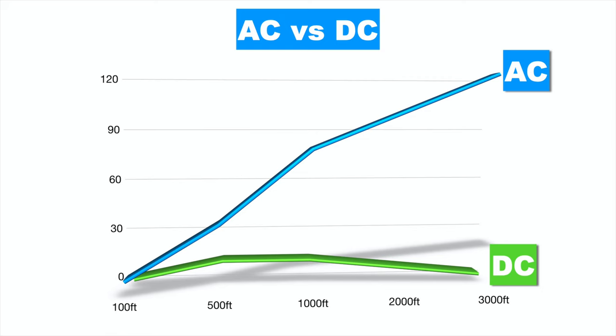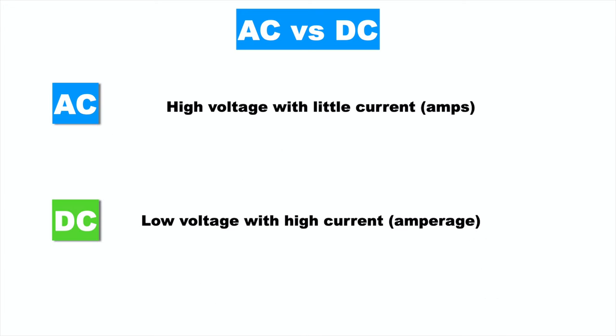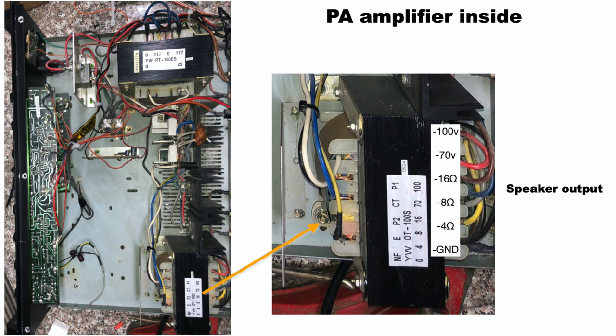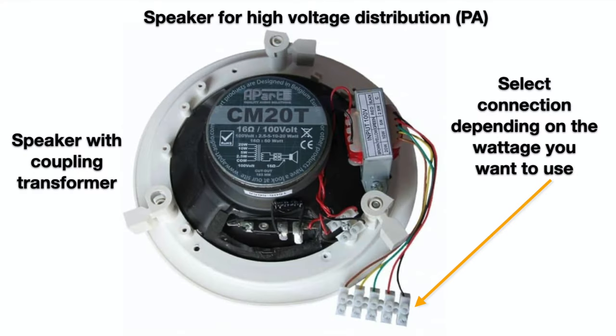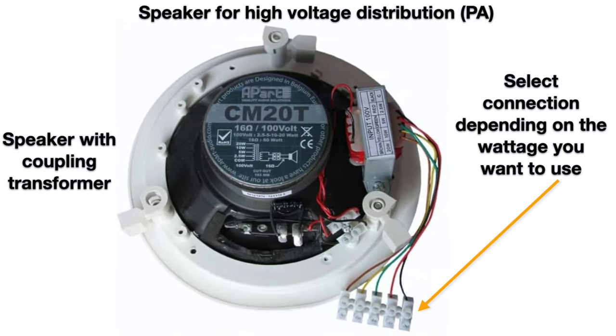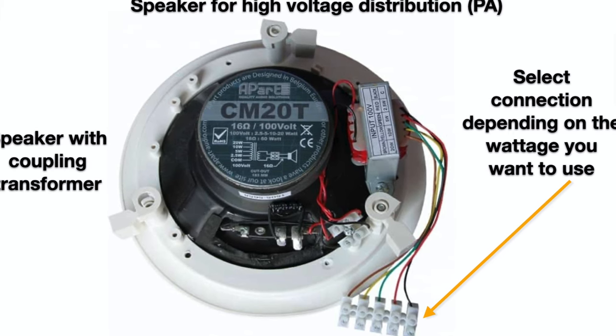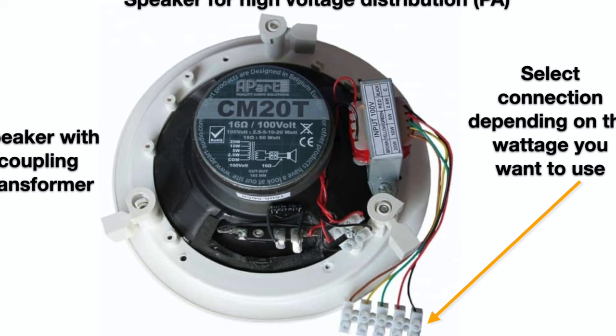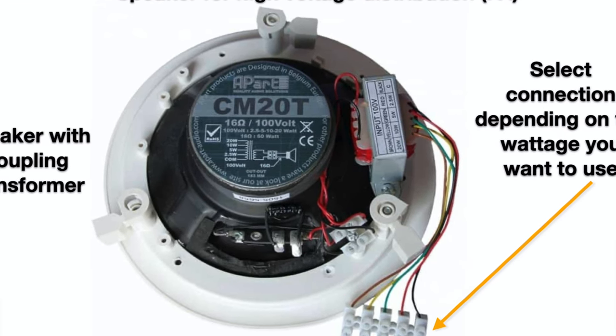Because alternating current is very easy to step up with a transformer, you can transmit it over long distances across the nation and then step it down at the house — lower voltage with higher current. You cannot do the same with DC. That's why these amplifiers use the same principle: the amplifier steps up the music signal to 70 or over 100 volts, transmits it over hundreds of feet of wire to many speakers, then steps it down at each speaker with a transformer, letting you select the wattage for that particular speaker.